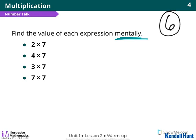Alright, I think most of us are probably done. Let's just all say our answers. What's two times seven? What's four times seven? Twenty-eight. Three times seven? Seven times seven?